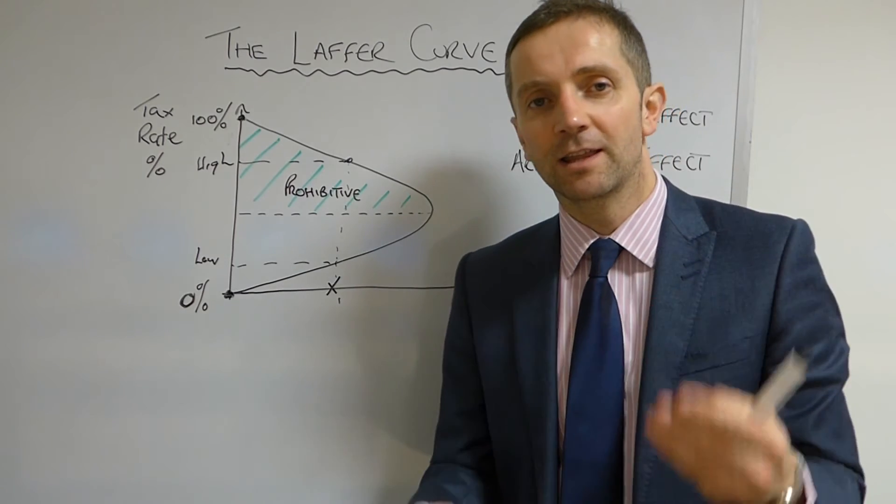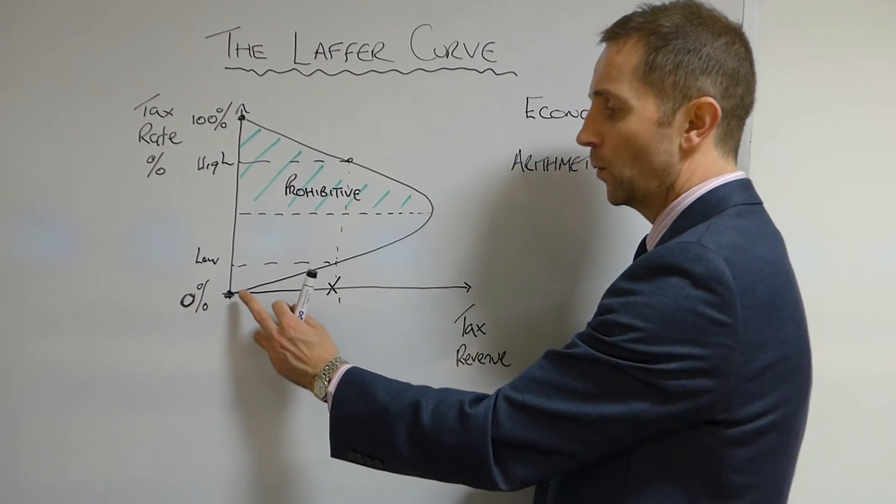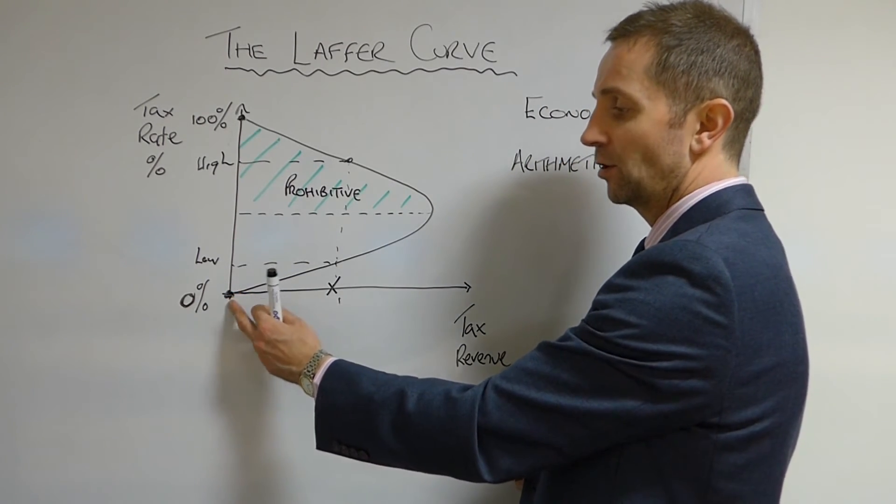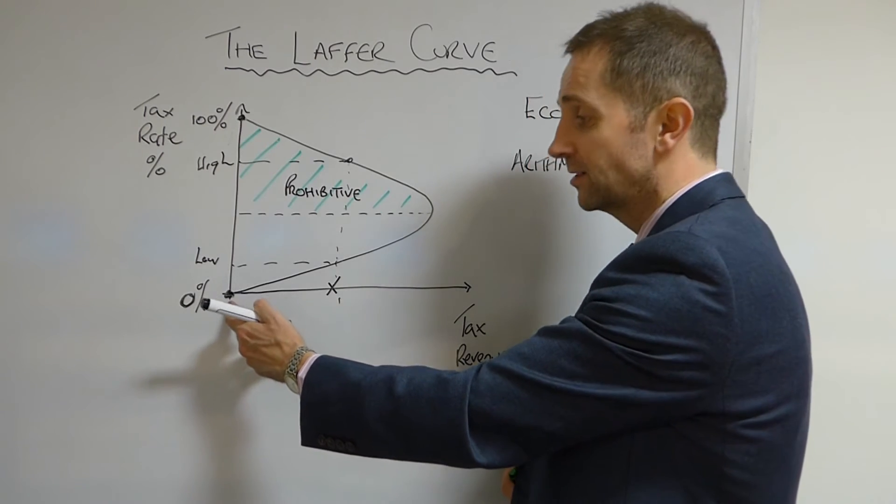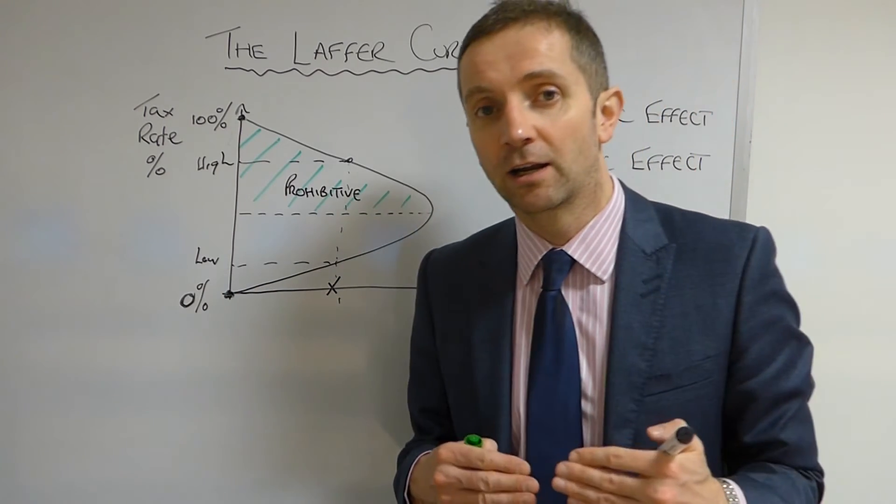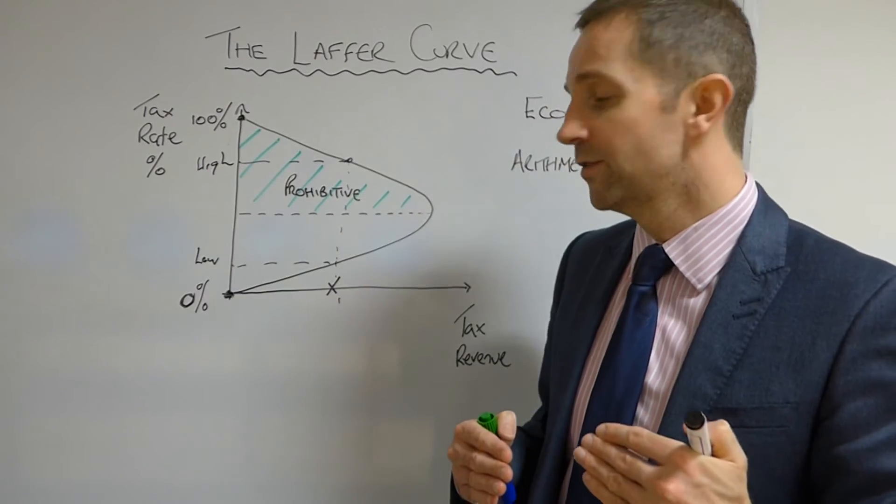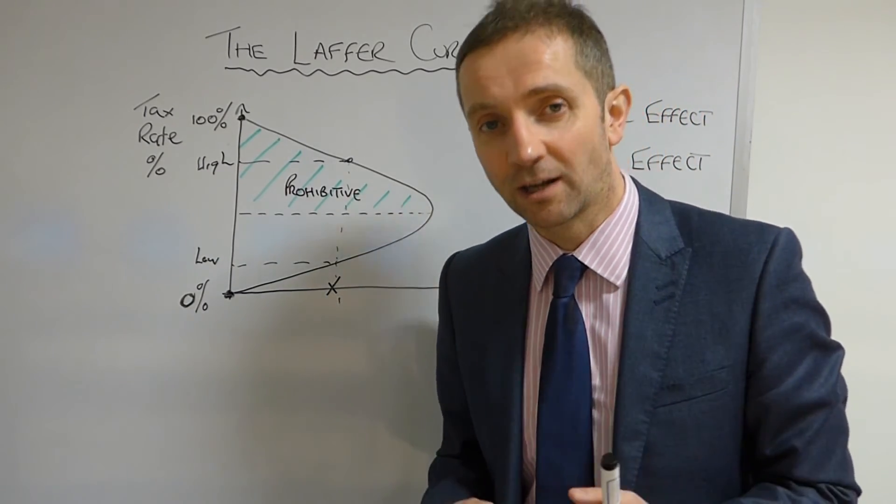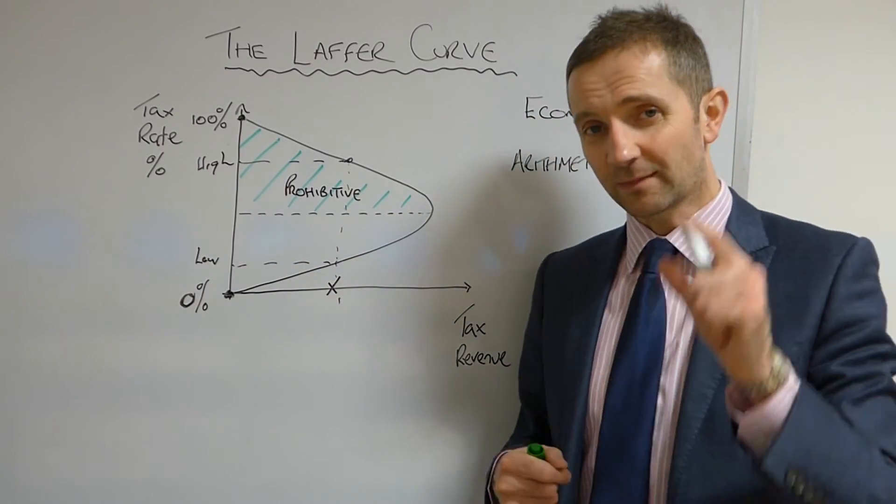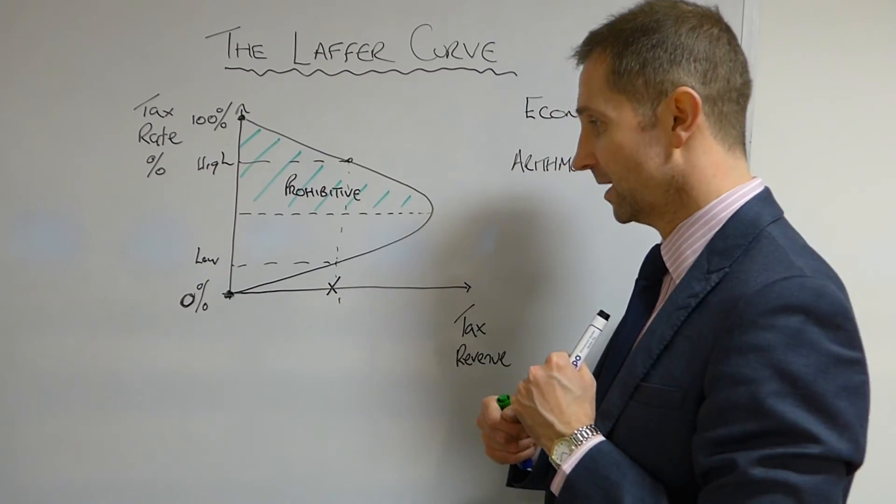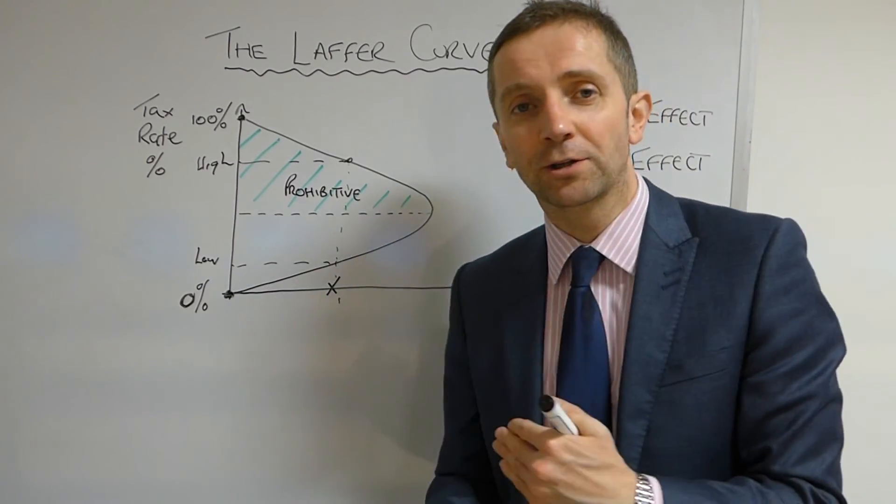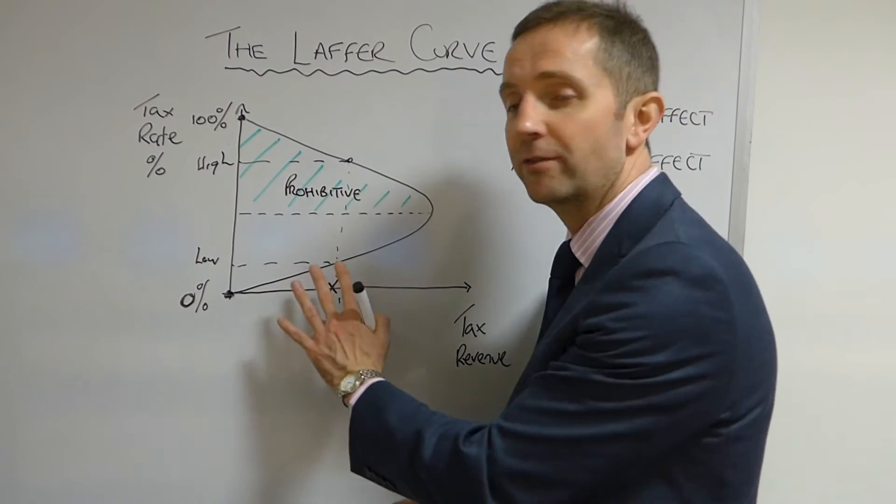The arithmetic effect is this: that whenever you start from a zero percent tax rate and you then start to increase the rate of tax, you will obviously then start to increase the amount of tax revenue that you collect. That is the arithmetic effect.